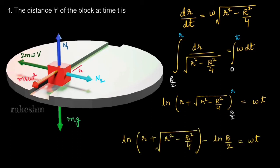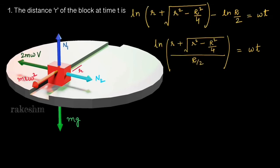So we have ω·t on the right side. Substituting the upper and lower limits, we get ln(r + √(r² - R²/4)) minus the result at the lower limit r = R/2. When R/2 is substituted, (R/2)² and R²/4 cancel, leaving just ln(R/2). Using the formula ln a - ln b = ln(a/b), we get the combined expression equal to ω·t.